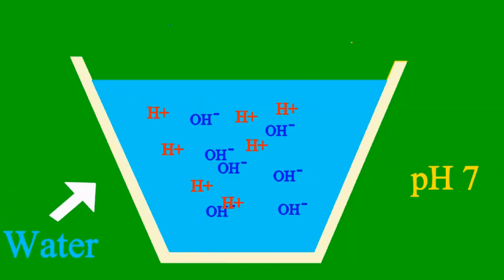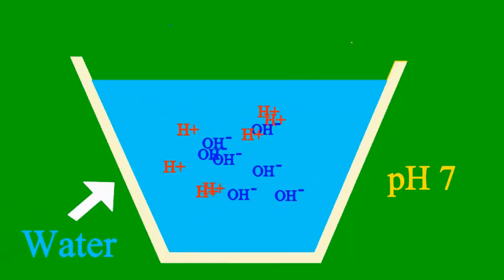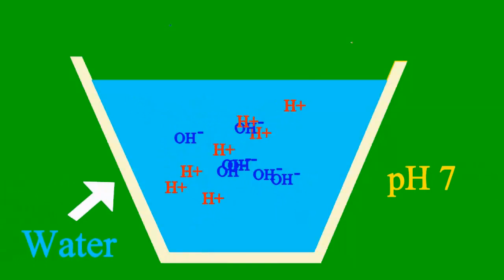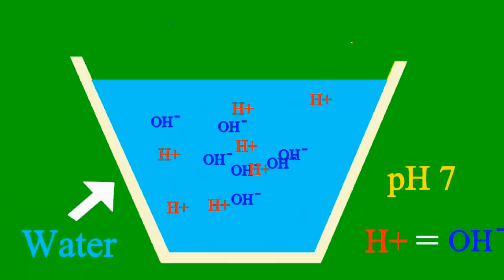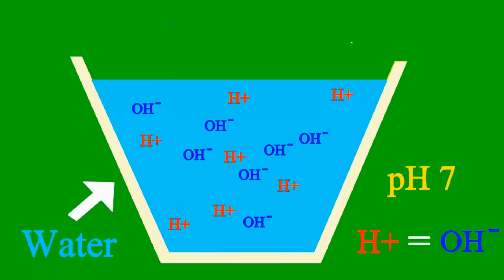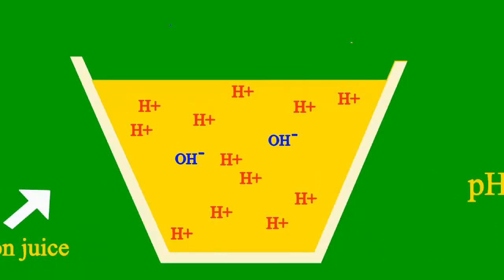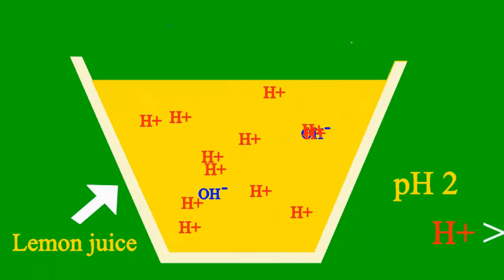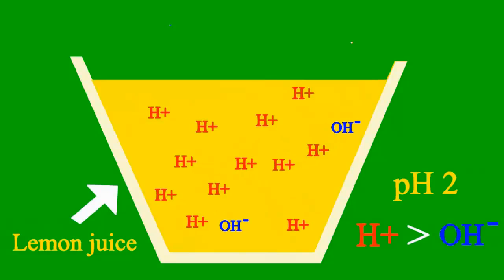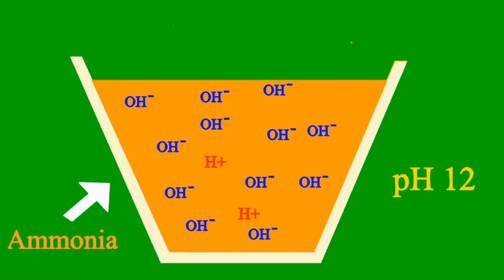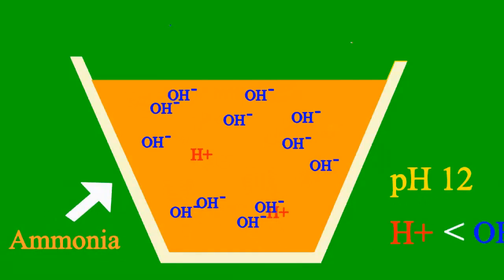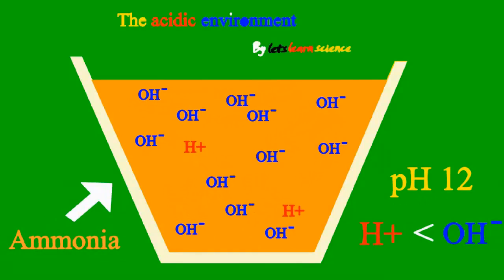When the pH is 7, it's a case where the sample is neither an acid nor a base. But less than 7, it's an acid. More than 7, it's a base all the way.